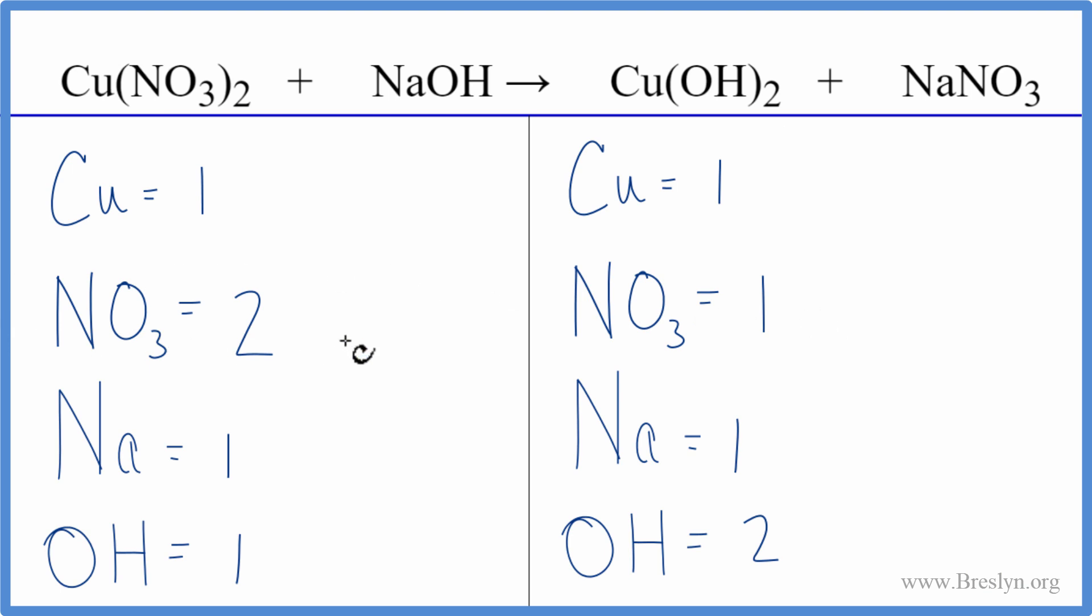Let's balance the nitrates first. We have two here, one here. Let's put a coefficient of two in front of the sodium nitrate. Now we have one nitrate times two. So that gives us two nitrates.